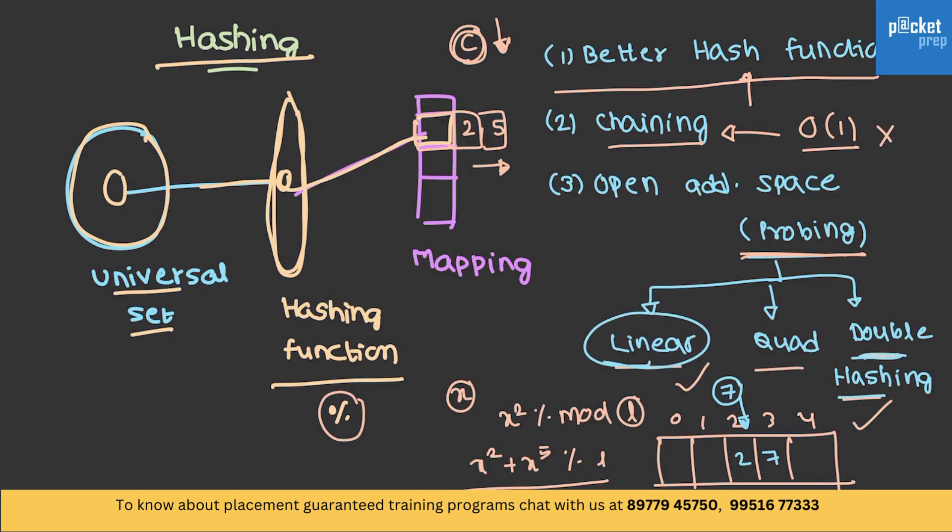In the case of double hashing, whenever I encounter a collision, I will try to use another hash function which may give me other position which is empty.